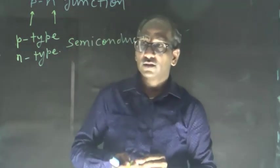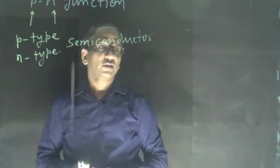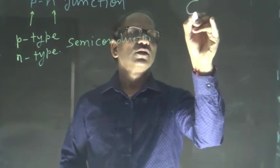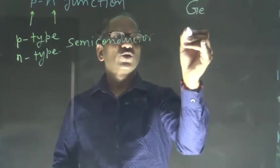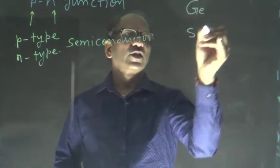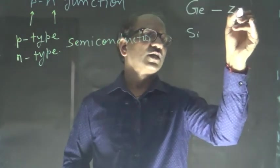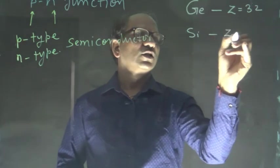First of all, we have to know what is intrinsic semiconductor. Germanium and silicon are these two. Germanium atomic number Z is equal to 32, and for silicon it is 14.